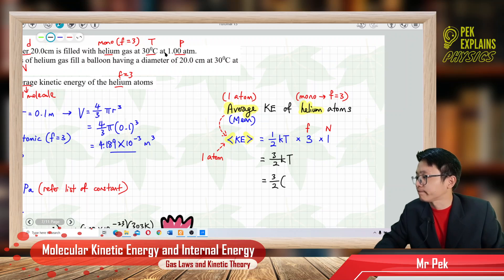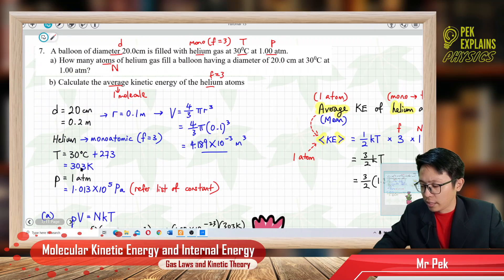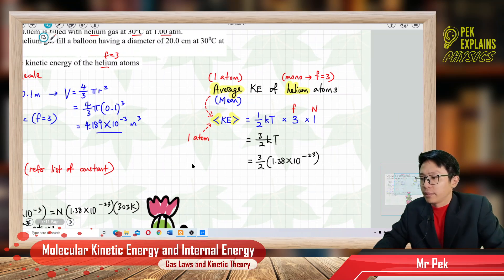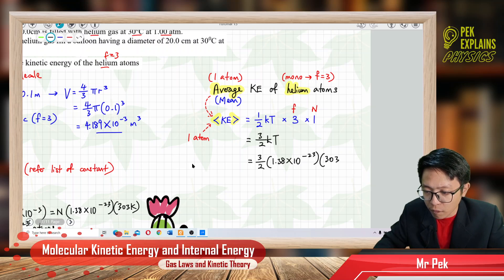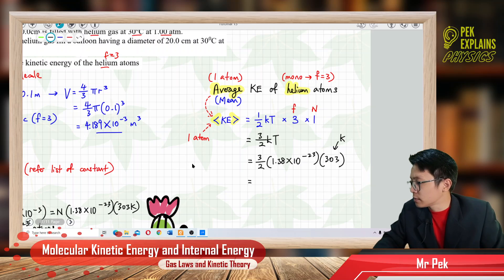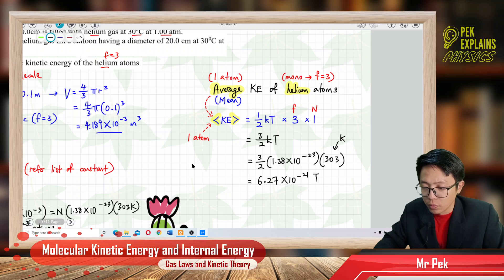3 over 2. What is your k? The k I got is 1.38 exponent negative 23. That's my k. You can find this value, 1.38, Boltzmann constant value, from list of constant. The temperature is 30 degree Celsius, I change to Kelvin already, 303 Kelvin. This one must be in Kelvin. What's the answer you get? The answer I get after multiply, I got 6.27 exponent negative 21 Joule.